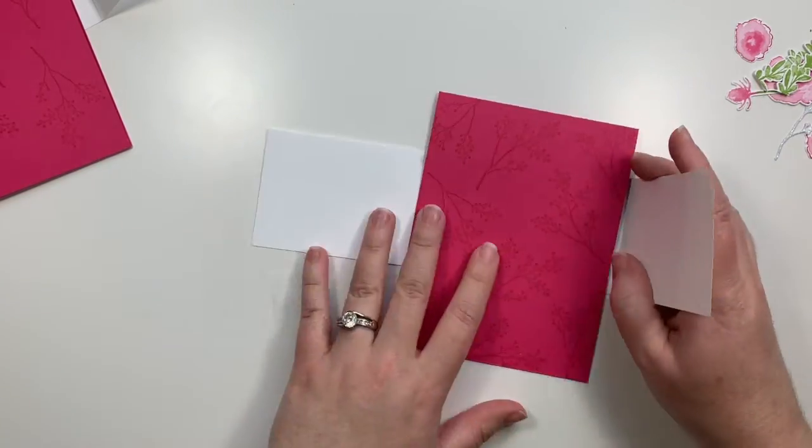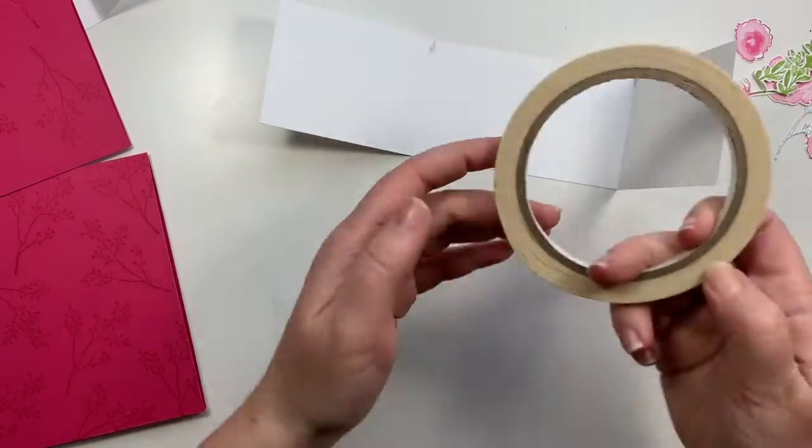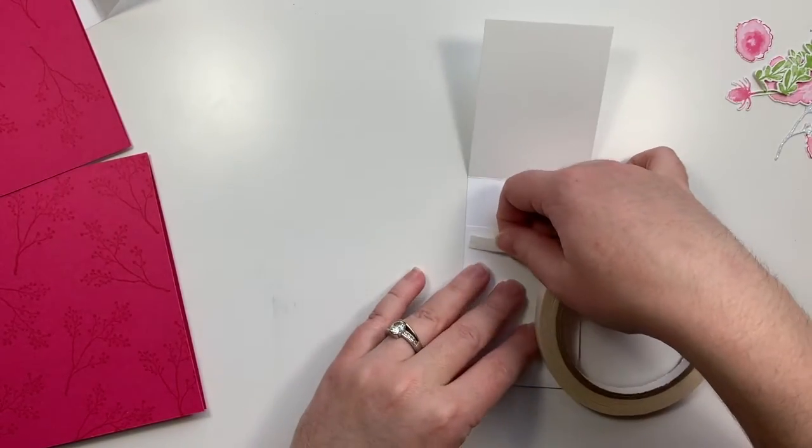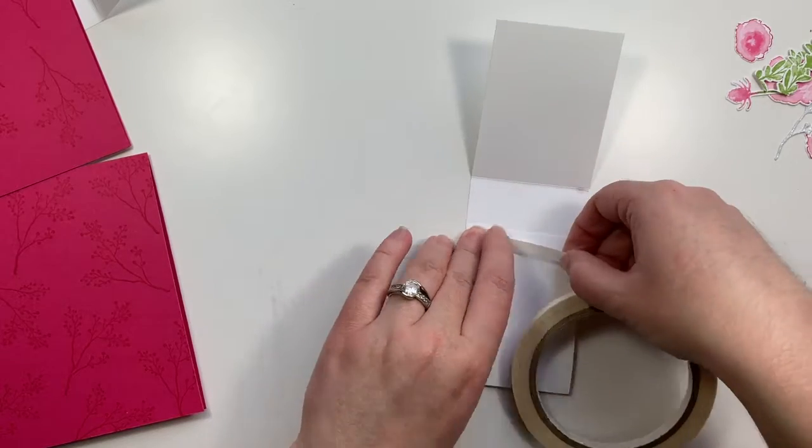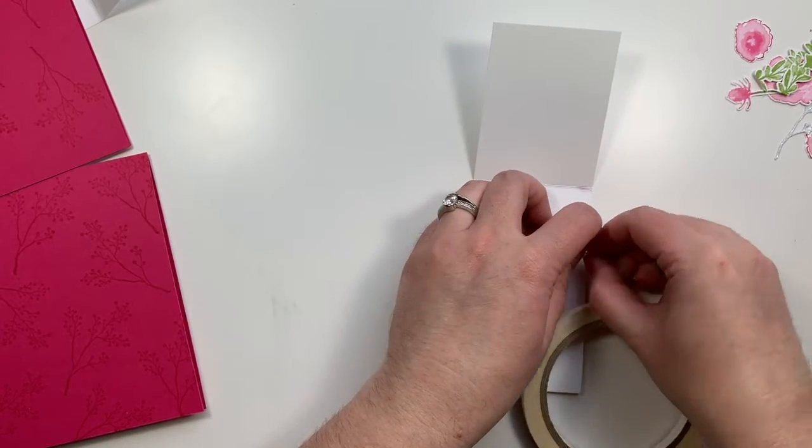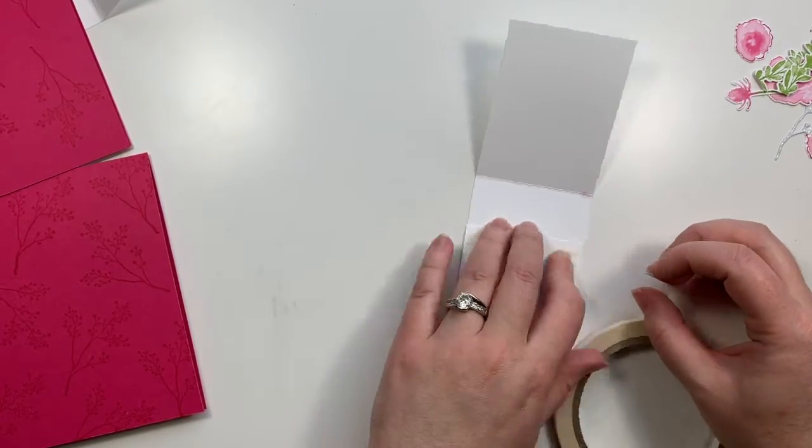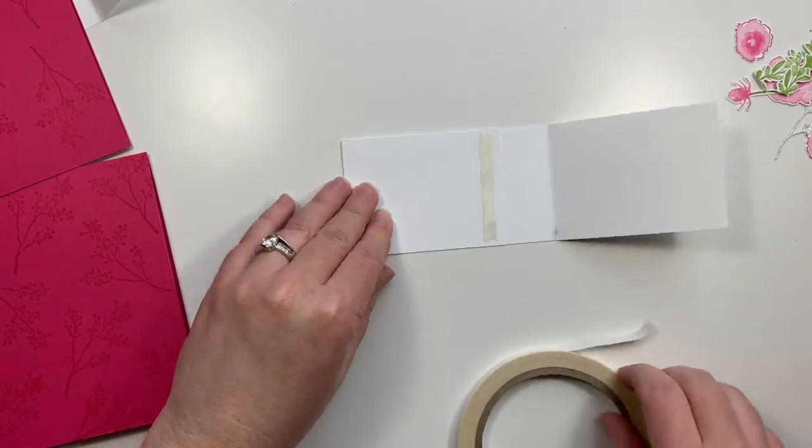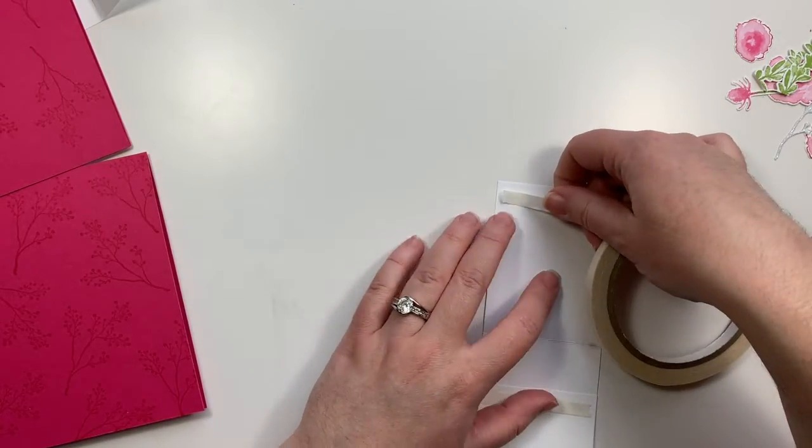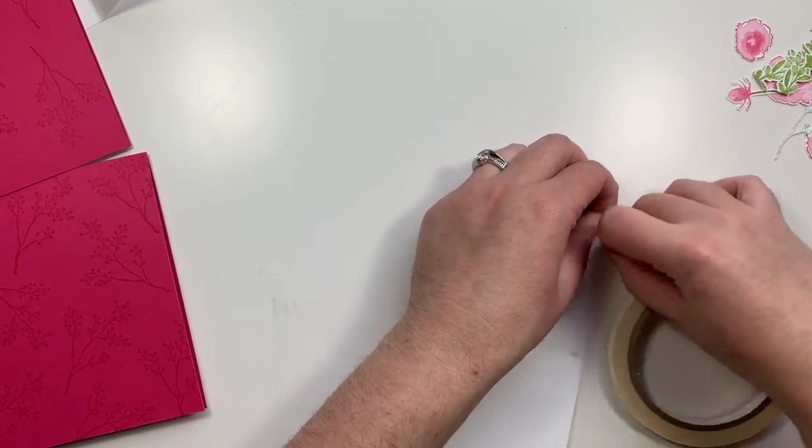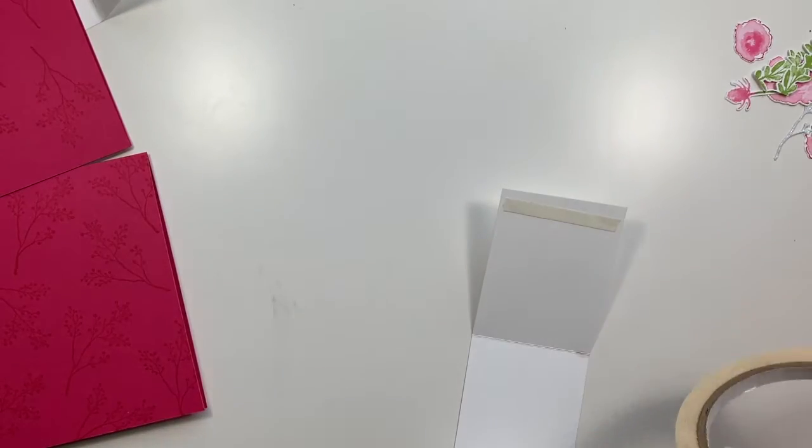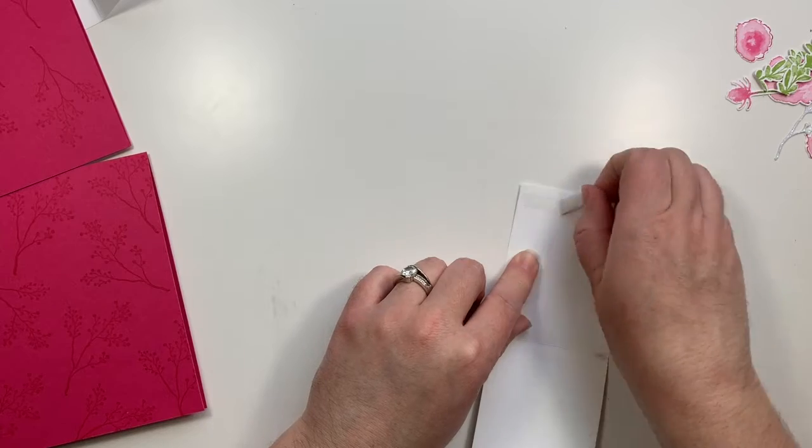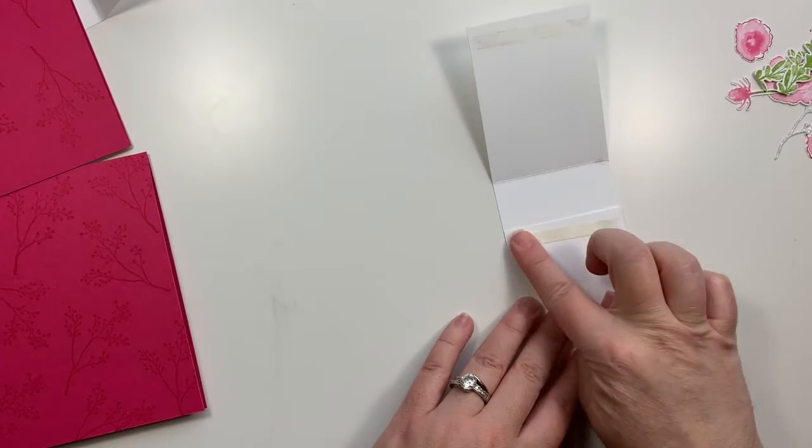Now I'm going to wrap it around my card, make sure the fit is good. And then I'm going to take some of our tear and tape adhesive, and we put a strip on the outside here. And I'm also going to put a strip on the inside of the other flap. Make sure that you put them on the correct sides.